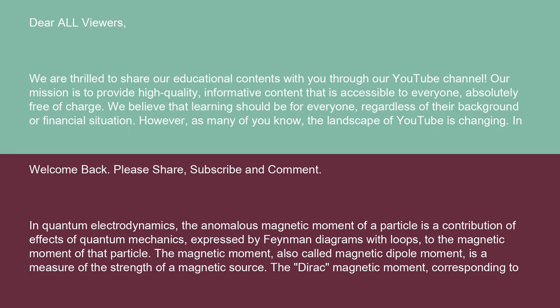In quantum electrodynamics, the anomalous magnetic moment of a particle is a contribution of effects of quantum mechanics, expressed by Feynman diagrams with loops, to the magnetic moment of that particle.